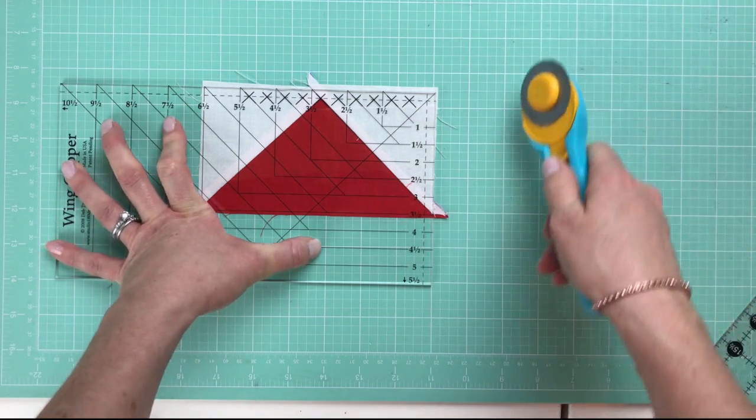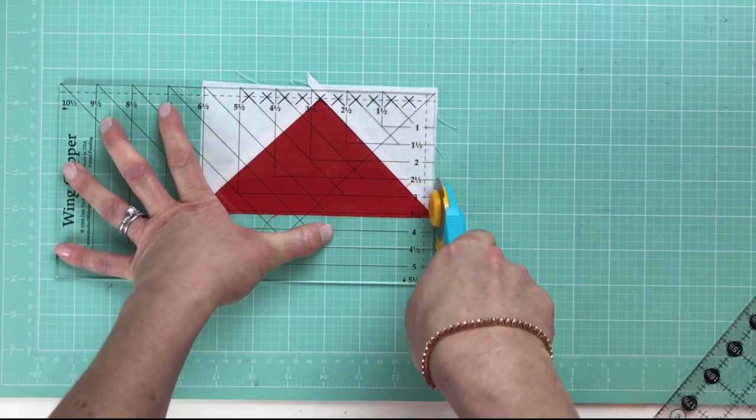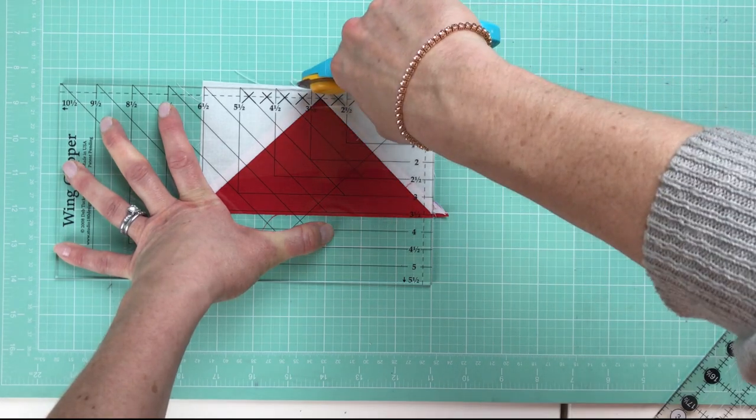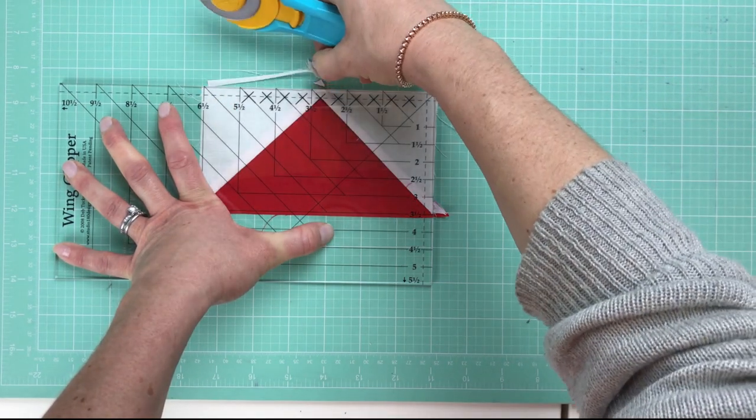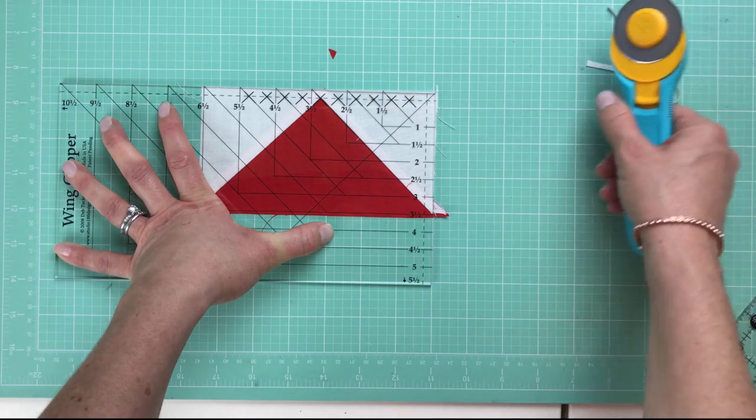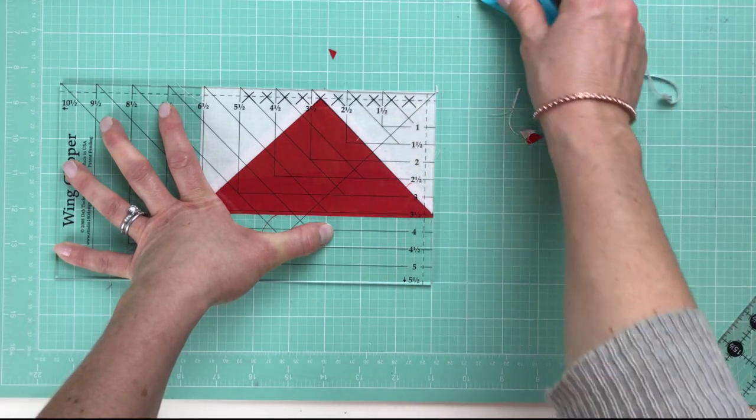So I'm going to get exactly 6½ inches wide. All right, so let's go ahead and trim this dog ear off on the right. Trim the top. I have a nice new blade, so that came right off, which is so lovely. Always close your rotary cutter.